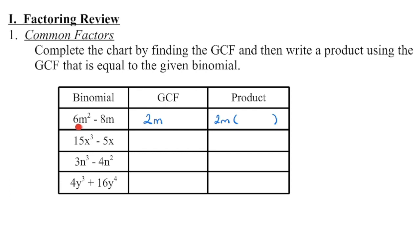If we begin with two terms, we have to have two terms in the bracket. We can say 2m times what gets us back to 6m squared. We know 2 times 3 gives us 6, and m times m gives us m squared. Then we're going to say 2m times what would give us the second term of negative 8m. Since we already have an m here, we check: 2m times negative 4 gives us negative 8m. Product is multiplication, so when we multiply those two together by distribution, do we get back what we originally had? If so, you factored it correctly.